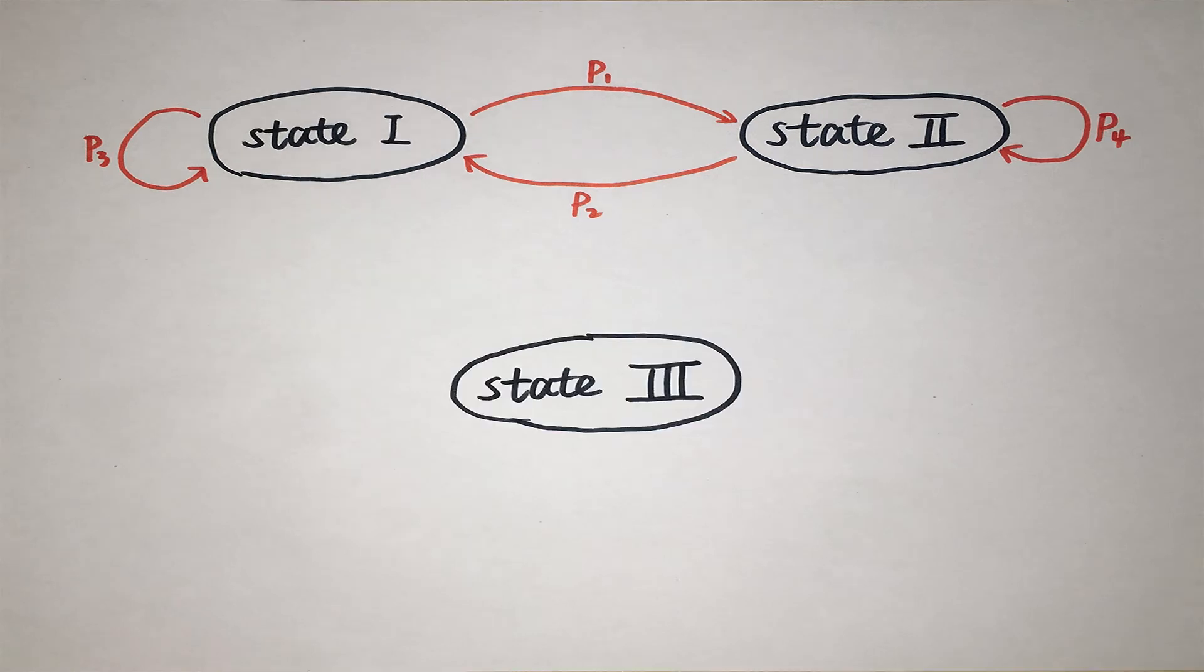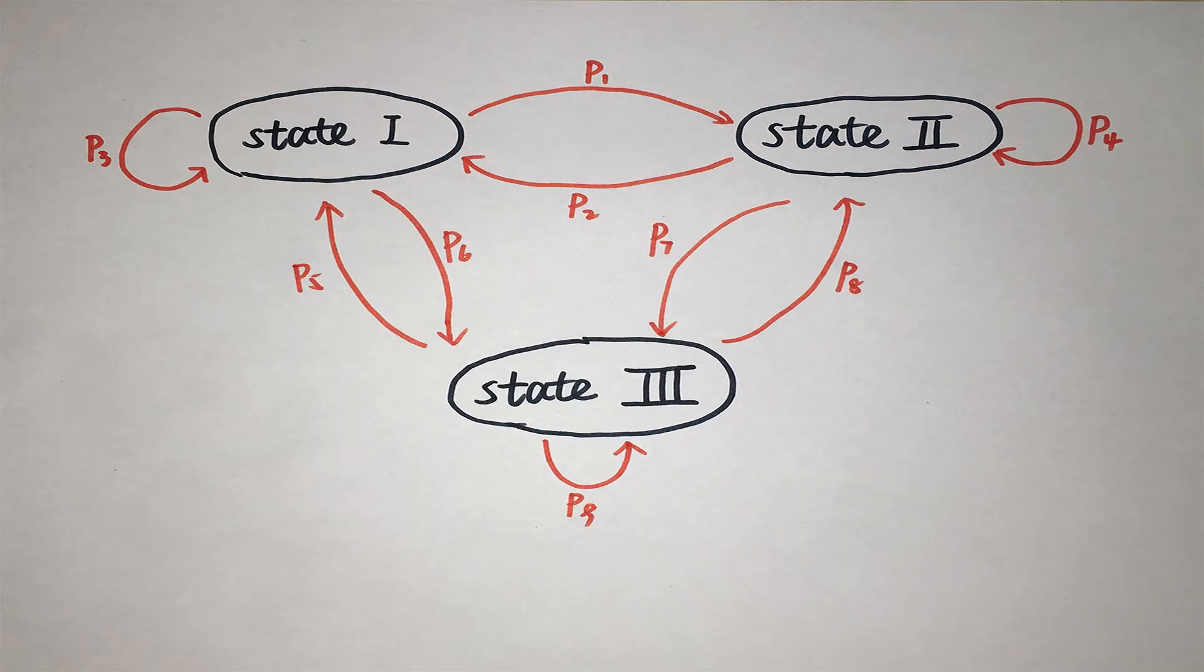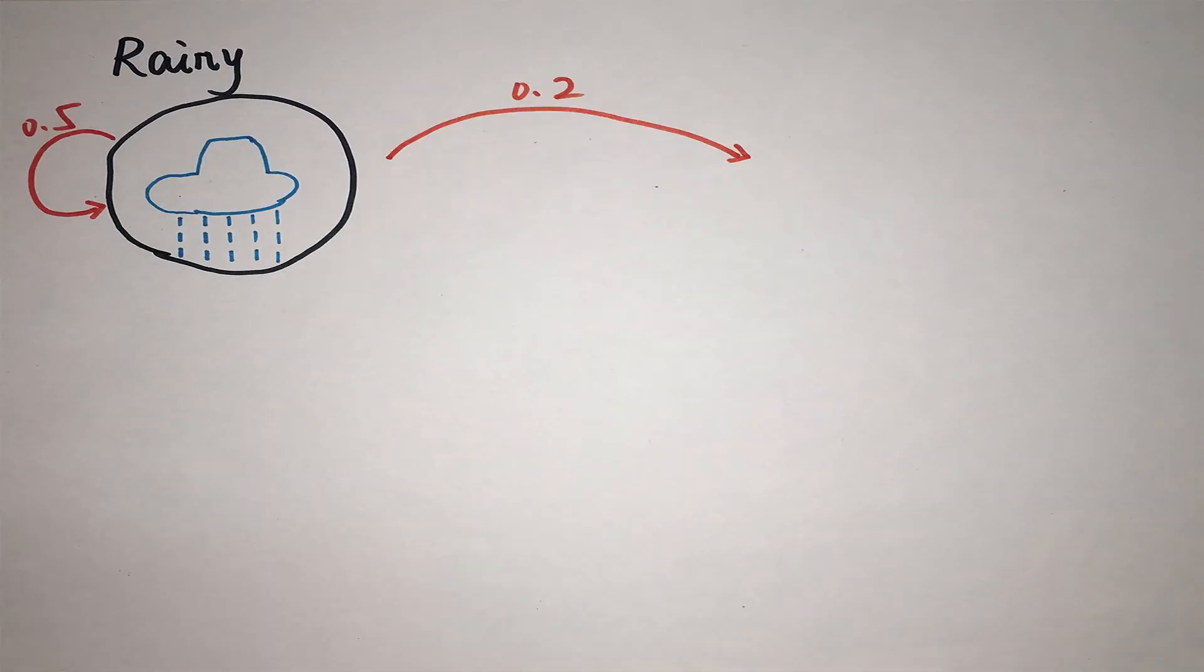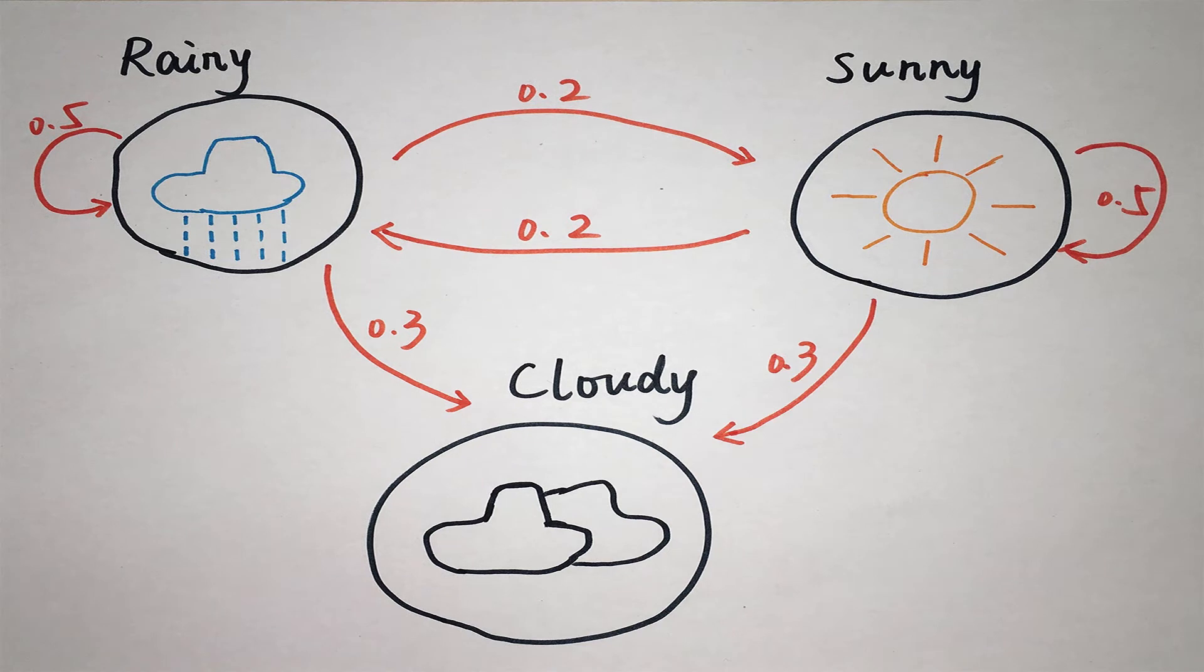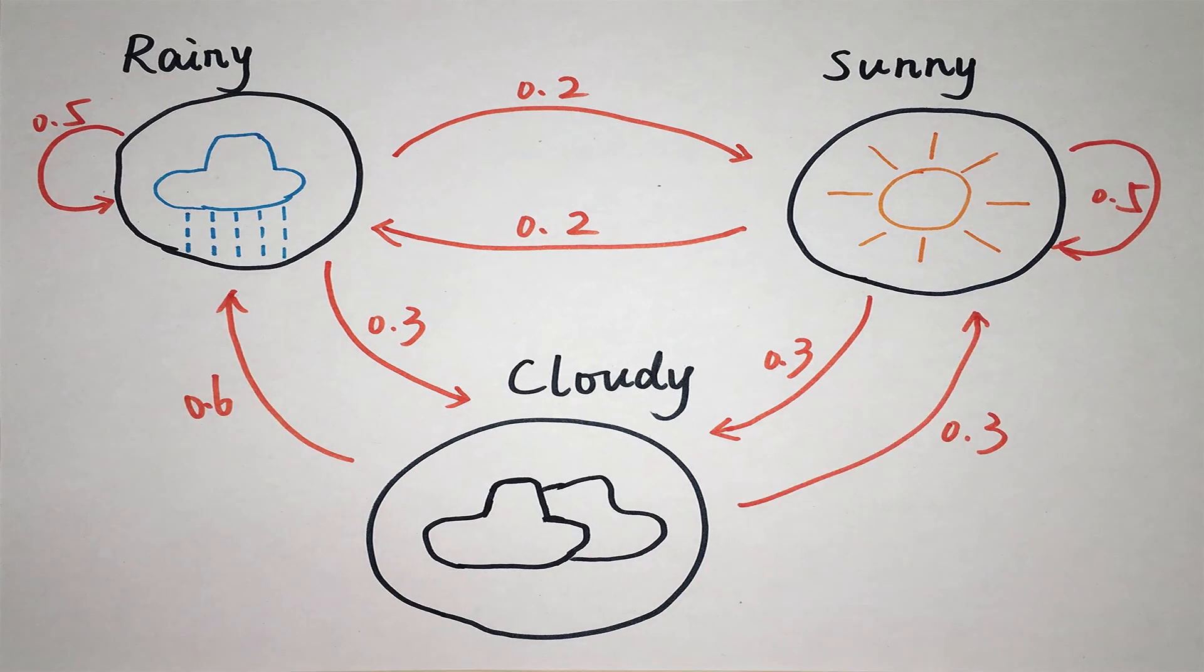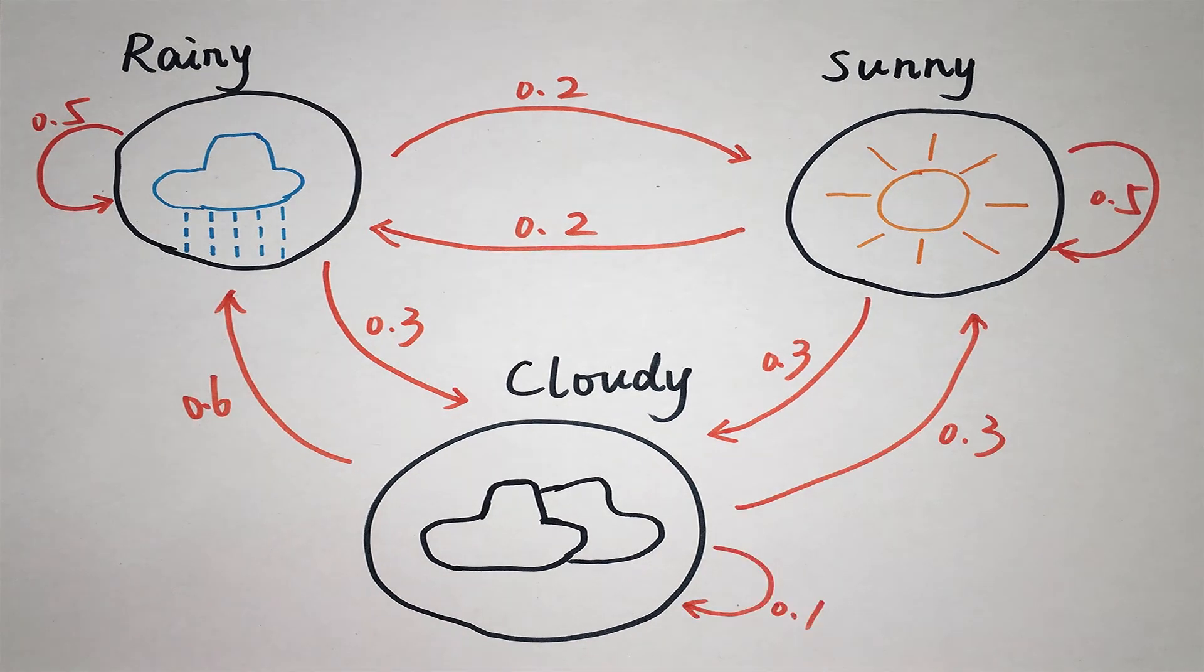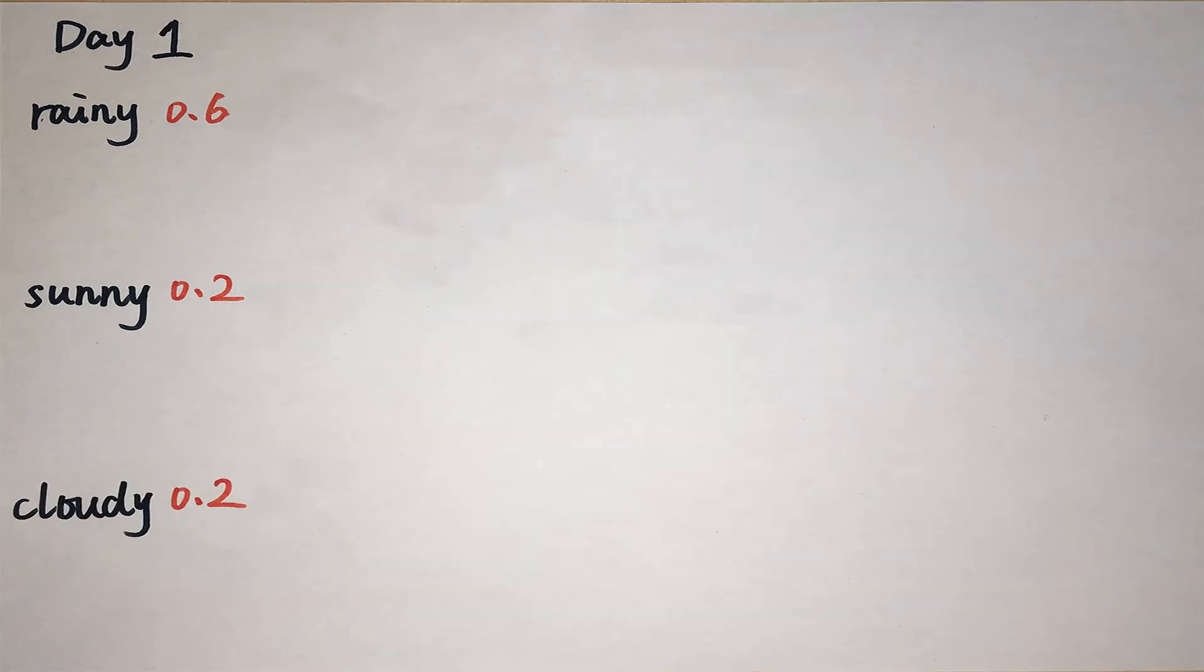But what if there are three states? Let's consider an ideal city, the weather of which changes following the Markov chain. Suppose there are only three types of weather: rainy, sunny, and cloudy. And the current weather condition only depends on the day before. The transition probability of each movement is given in the transition diagram. As for the first day, suppose the probability of three states are already fixed, say 60% or 0.6 for raining, 20% for sunny, and 20% for cloudy.